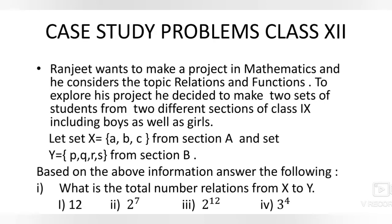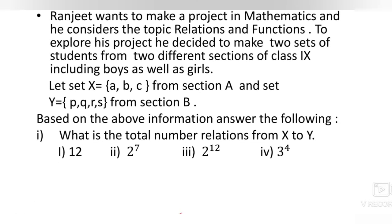This is case study problem number one. Ranjit wants to make a project in mathematics on the topics of relations and functions. He makes two sets from two different sections of class ninth: Set X = {A, B, C} from section A, and Set Y = {P, Q, R, S} from section B. The first question is: what is the total number of relations from X to Y? Options are: 12, 2 raised to power 7, 2 raised to power 12, or 3 raised to power 4.